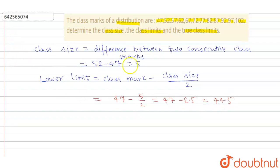So here upper class limit or upper limit you can write. So here upper limit equals class mark plus class size upon two. So here we have to find for 47, 47 plus 5 by 2 or 47 plus 2.5. Or we can write here 49.5.